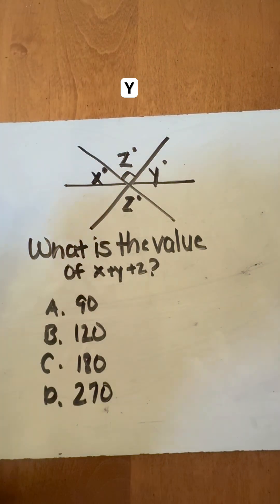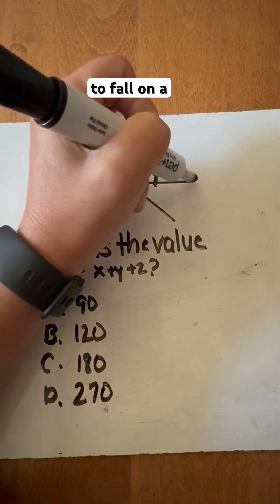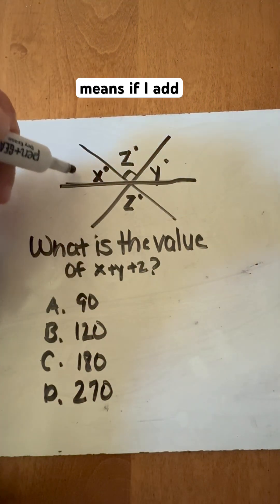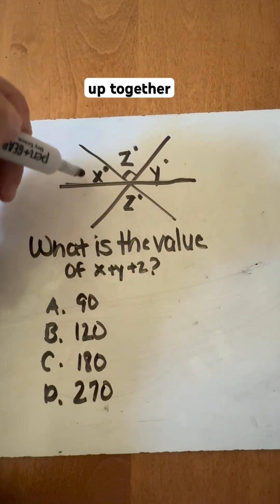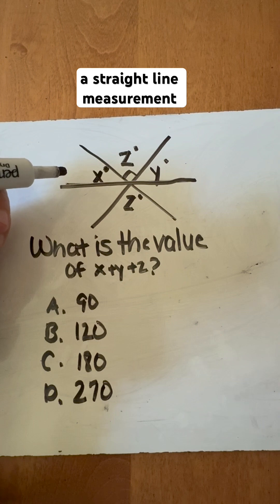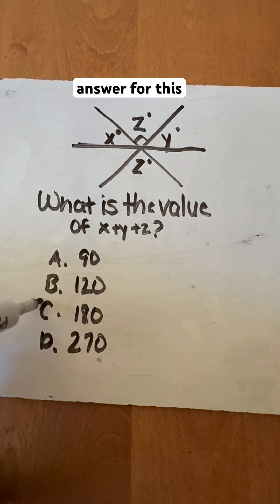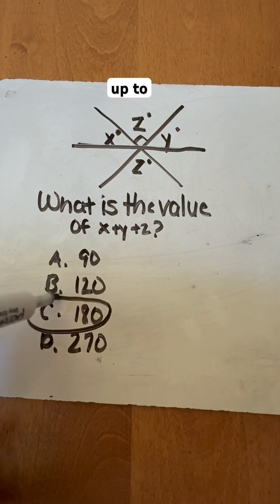Now, x, y, and z all happen to fall on a straight line. If I add all three of these angles up together, they will add up to a straight line measurement, which is 180 degrees. So my answer for this would be that they add up to 180 degrees.